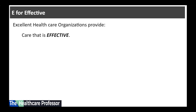Third, healthcare must be effective. The care should be based on scientific knowledge for all who could benefit, with neither under use or over use of the best available treatments and resources. For example, every heart patient who would benefit from beta blockers should get them, and no child with a simple ear infection should get advanced antibiotics. Best scientific evidence must inform clinical decisions — that is the base of providing effective healthcare.